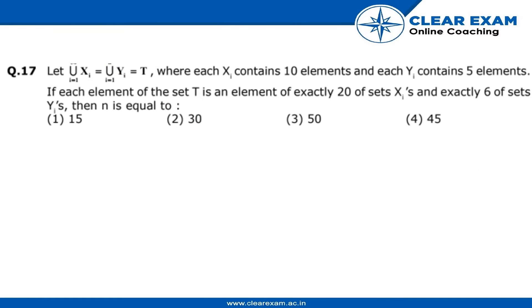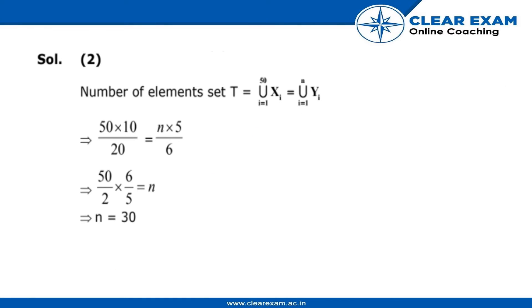Now let's move to the solution. We will write the equation for the number of elements in set T. This is 50, this is n, and ∪Xi equals ∪Yi. Now we multiply this 50 by 10.